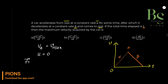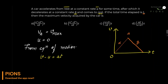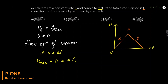अगर velocity A पे v_max है और initial velocity 0 है, तो equation of motion से: v − u = a·t। V है v_max, u है 0, acceleration है alpha, time है t₁। तो maximum velocity: v_max = α·t₁ — यह equation number 1।